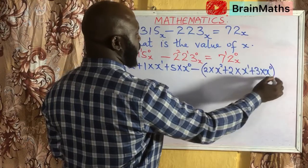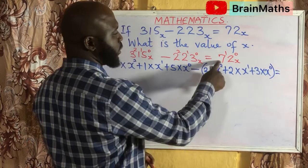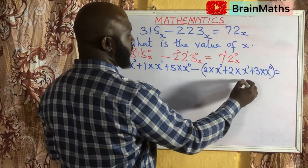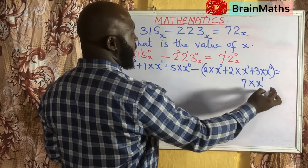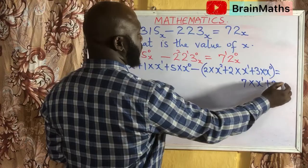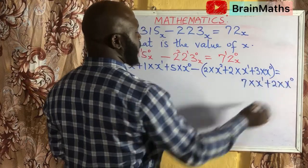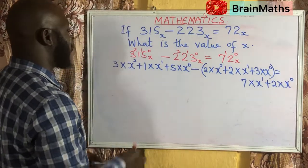That equals — then you expand this one as well — 7 times X raised to power 1, plus 2 times X raised to power 0.